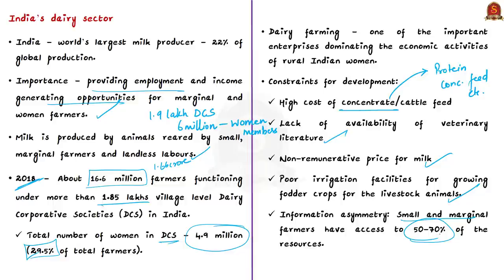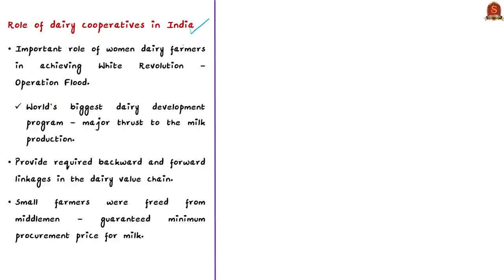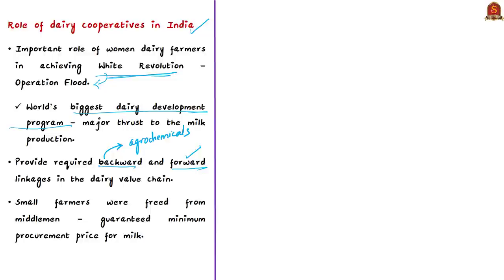This is where the role of dairy cooperative societies is important. Women dairy farmers played a significant role in achieving India's White Revolution, also known as Operation Flood, which was the world's biggest dairy development program giving a major thrust to milk production. A successful dairy cooperative provided the required backward linkages — from the farm to the non-farm sector providing agricultural inputs — and forward linkages — the non-farm sector that uses agricultural output as input — in the dairy value chain. Small farmers were freed from middlemen and guaranteed a minimum procurement price for milk.